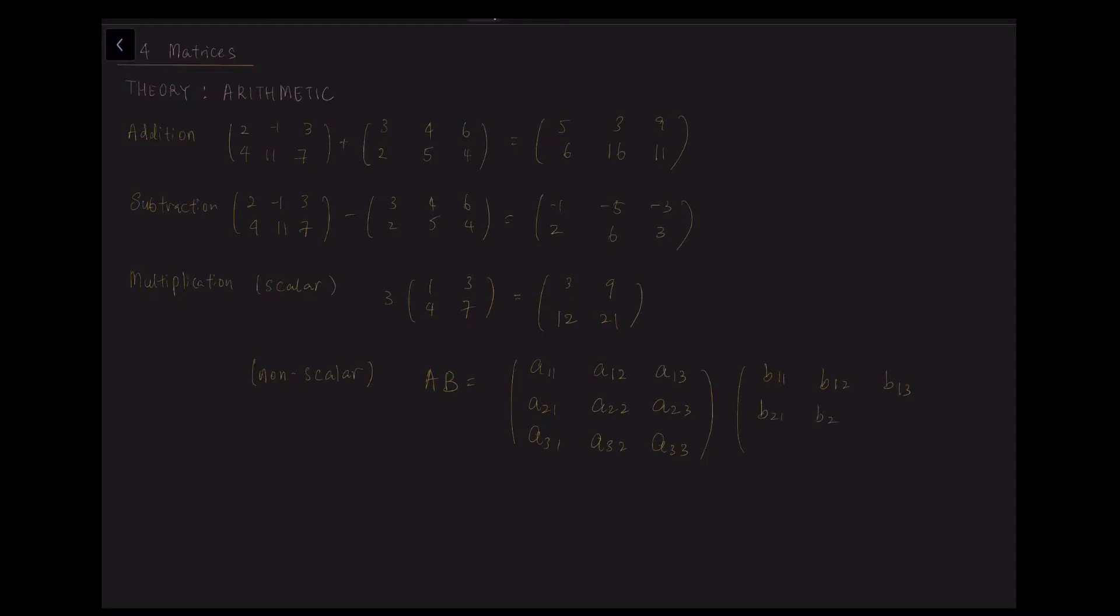So what you do is you have to do the multiplication of each row. And the multiplication we do here is scalar product, which you have learned in the vector. So the first row will multiply with each column of the second matrix, and so on and so forth.